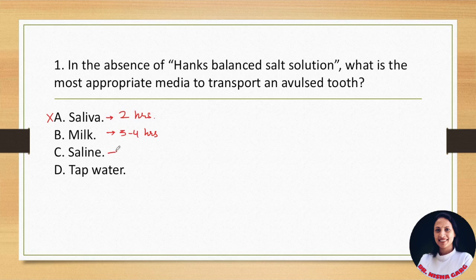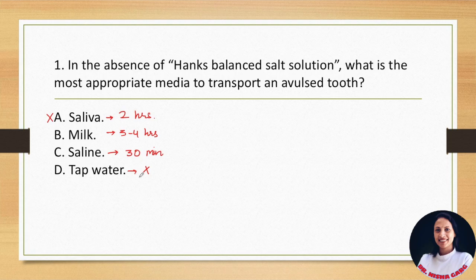Milk is relatively bacteria-free and its osmolality is compatible with vital cells. Saline is also isotonic and sterile and provides storage up to 30 minutes. Tap water is the least desirable transport media because it results in hypotonic rapid cell lysis due to its osmolality and presence of bacteria. So milk is the best choice after Hanks Balance Salt Solution. Answer is B, milk.